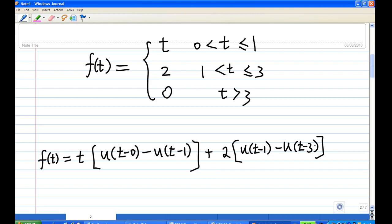And then I want this value to be 0 for t greater than 3. So I equal to 0 multiplied by u(t-3) to minus u(t-infinity) from t to infinity, right?